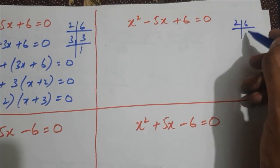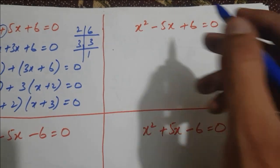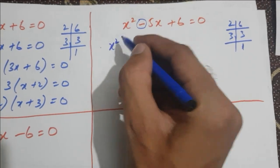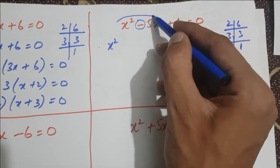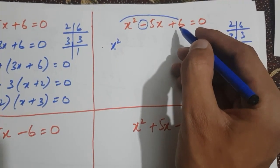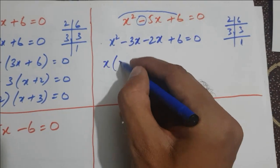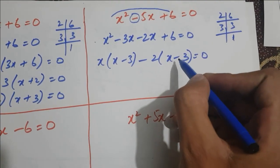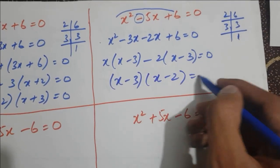For x² − 5x + 6 = 0, we factorize 6 as 2 times 3, giving factors 2 × 3 = 6. The product of the coefficient of x² and constant is positive, so both factors have the same sign. But the middle term is negative, so both factors are negative. We write x² − 3x − 2x + 6 = 0. Taking x common: x(x − 3), then taking −2 common: −2(x − 3), since taking minus changes the bracket sign. We get (x − 3)(x − 2) = 0.